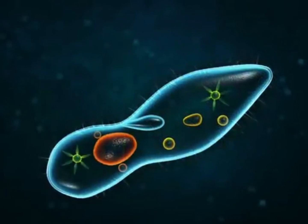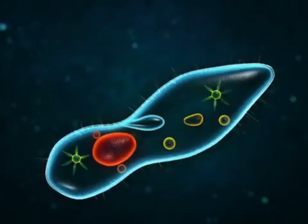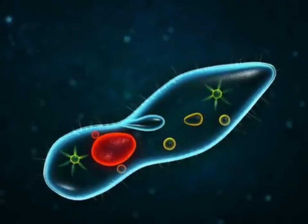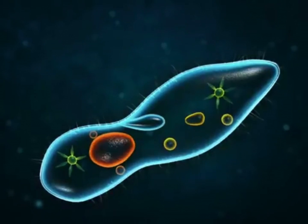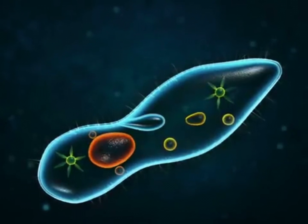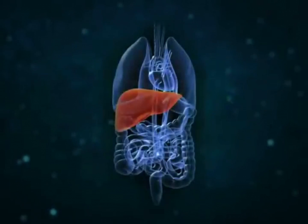Cells which contain two nuclei are known as binucleate cells. Binucleate cells occur in certain protozoans such as Paramecium, and cells of cartilage and liver.